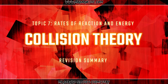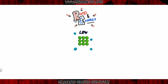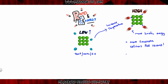Next we're going to look at collision theory — how can you explain why increasing the temperature, concentration, and surface area increases the rate of reaction? If we increase the temperature, as shown in the diagram, the particles have more kinetic energy and are moving about more. If they have more kinetic energy they move around faster, so there are more collisions and in particular more successful collisions per second, giving a faster rate of reaction.